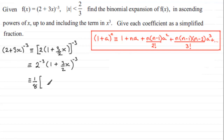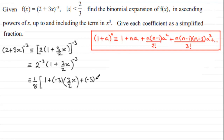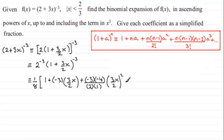Starting the expansion: the first term is 1, then + n·a = (-3) × (3/2)x. The next term is + [n(n-1)/2!]·a²: that's (-3)×(-4) over 2×1, multiplied by (3/2)x all squared.